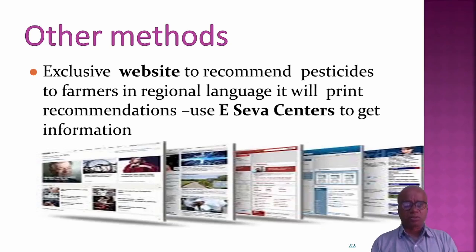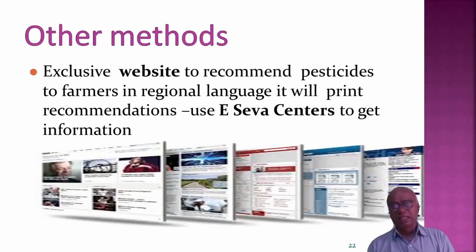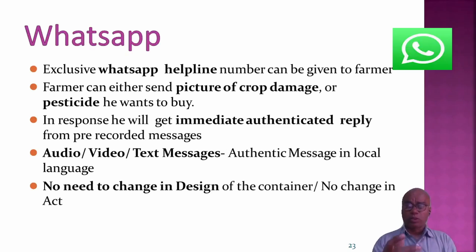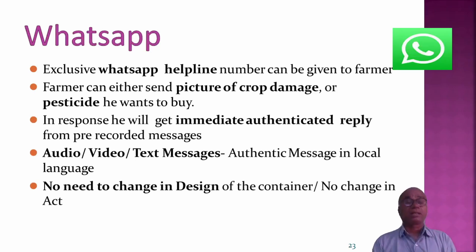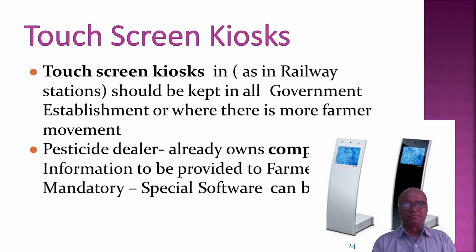There are a number of other methods also possible. We can create an exclusive website to recommend pesticides to farmers in regional language. We can give recommendations through e-seva centers. Even on WhatsApp, an exclusive helpline number can be provided to the farmer, where the farmer can send a picture of crop damage or the pesticide he wants to buy, and get an immediate, authenticated reply via pre-recorded audio, video, or text message in local language. Touch screen kiosks, similar to voter registration centers, can also be used, and shopkeepers with computers can be mandated to provide information to farmers.